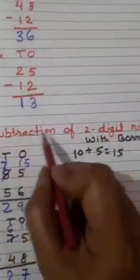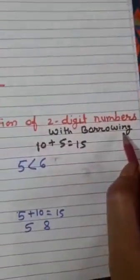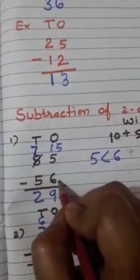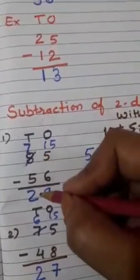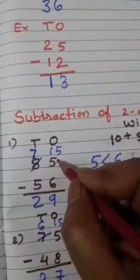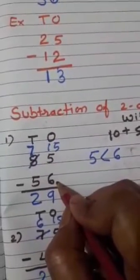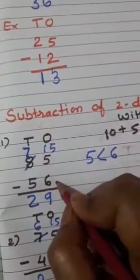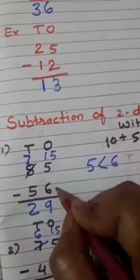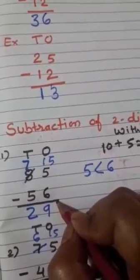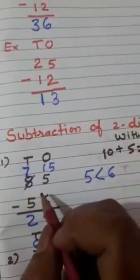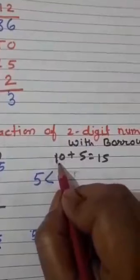Our next topic is subtraction of 2 digit numbers with borrowing. Look, one example: 85 minus 56. Again, you have to subtract 1s with 1s and 10s with 10s. In 1s place there is 5 minus 6. We will not subtract 6 from 5. Kya hum 6 ko 5 me se subtract kar sakte? No. So we will borrow 1 ten. Hum next number se 1s 10s ko borrow karenge. To 10 plus 5 equal to 15.